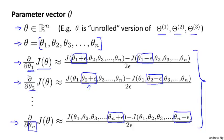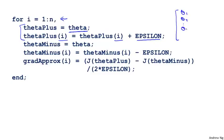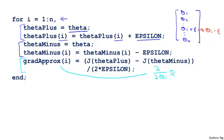Concretely, what you implement is the following. In Octave, we numerically compute the derivatives with a for loop: for i equals one through n, where n is the dimension of our parameter vector theta. I usually do this with the unrolled version of the parameters. I set theta plus equal to theta, then increase theta plus's i-th element by epsilon. So theta plus is equal to theta except that theta plus i is now incremented by epsilon. Similarly, theta minus is the same but with theta i minus epsilon. Then gradaprox of i is computed as J of theta plus minus J of theta minus, divided by two epsilon. This gives the approximation to the partial derivative with respect to theta i.